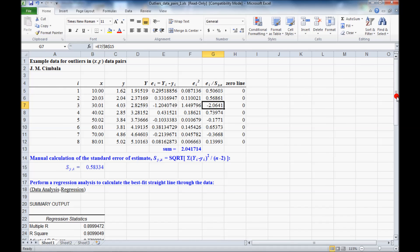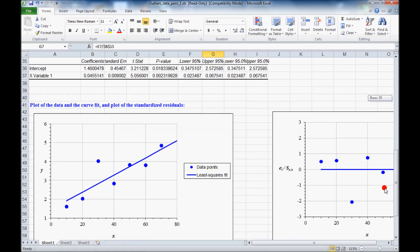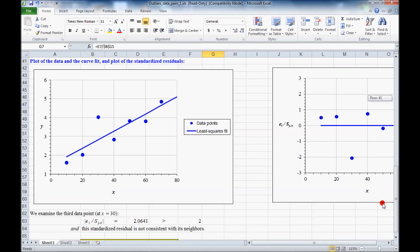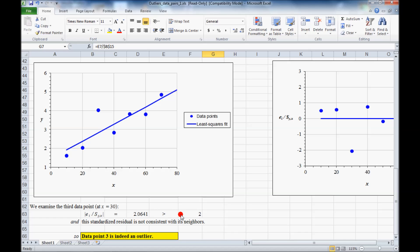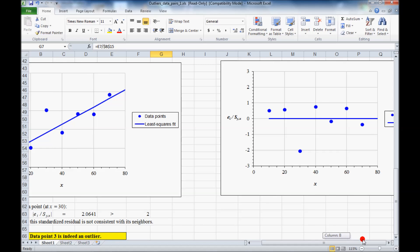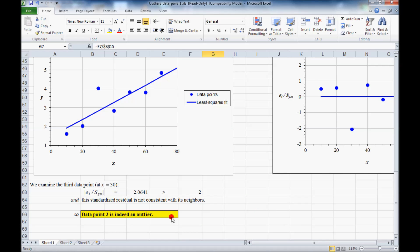So there's two rules for making this be an outlier. And again, we suspect this third data point. First of all, the absolute value of E over S has to be greater than 2. Is that true? Yes. And the other criteria is that this standardized residual is not consistent with its neighbors. And when we look at this plot, we see that these guys are all kind of hovered up here and then this one fellow is way down here. So it is not consistent with its neighbors.